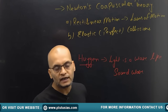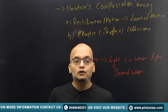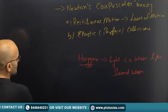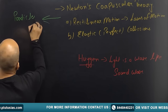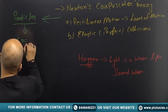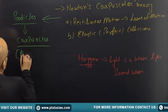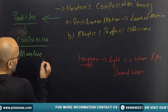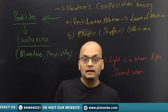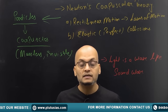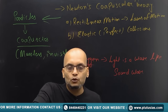According to Newton's Corpuscular Theory, light is made up of very tiny, massless particles. This was the first time someone said light is made up of particles. These particles were referred to as corpuscles by Sir Isaac Newton. He said these corpuscles are invisible and massless.